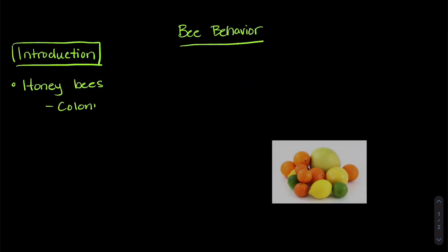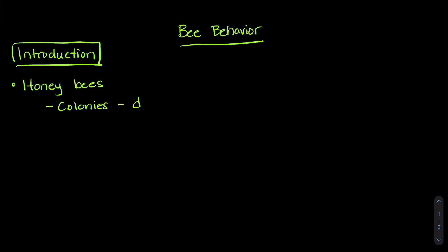Honeybees live in colonies, which means that individuals live really close together. Unfortunately, that means when a disease or parasite gets into the colony, it can spread really rapidly. The organization of the colony can help, though.